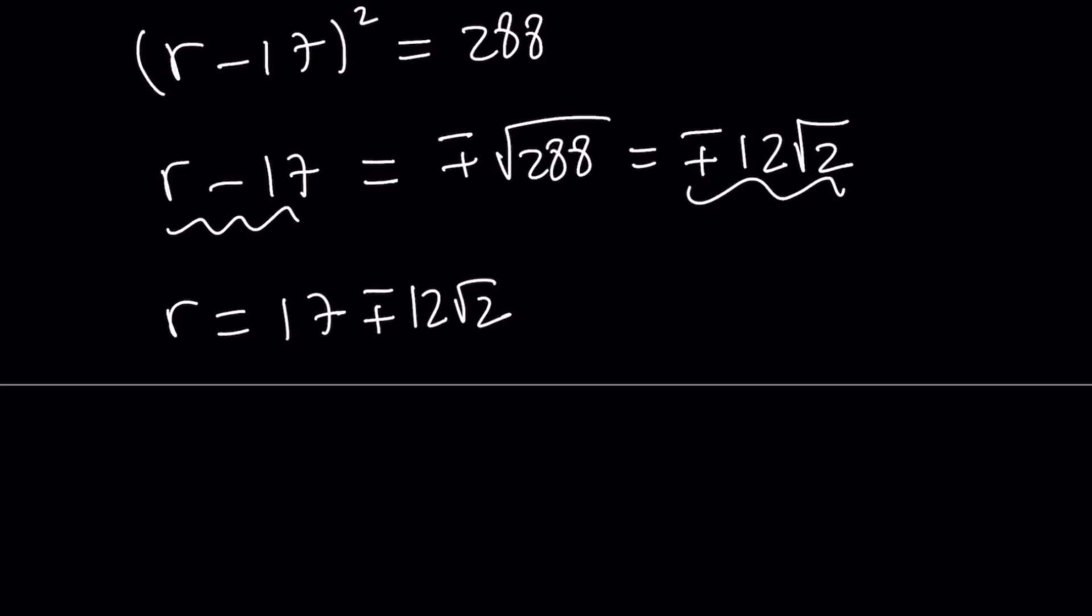All right. And now we have this equation, r minus 17 is equal to that. We can add 17 to both sides. And we get the r value as 17 plus minus 12 root 2. So this gives us two solutions because this is a quadratic equation. Which solution are we going to use? We're actually going to use both.